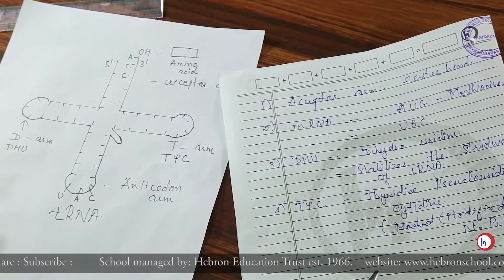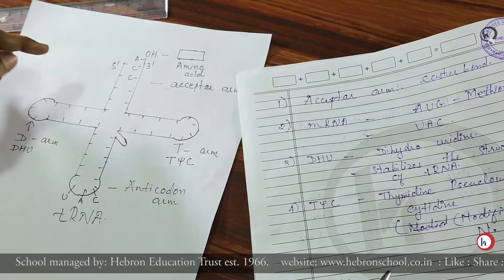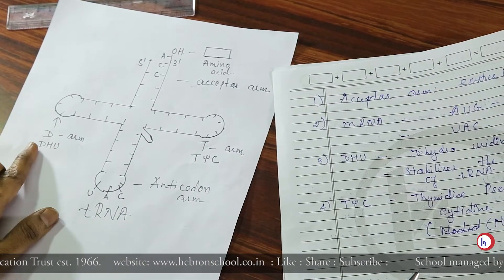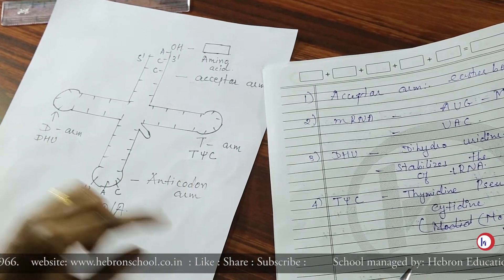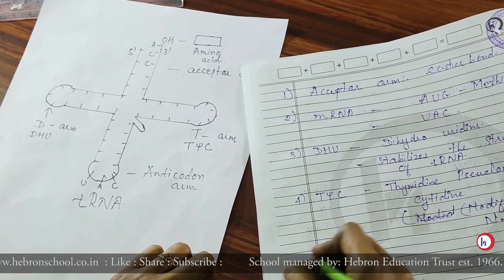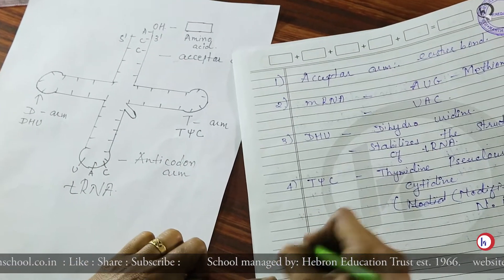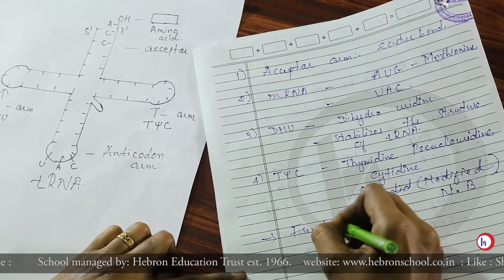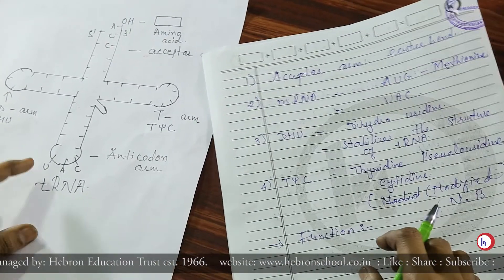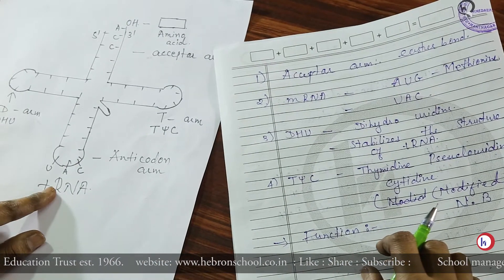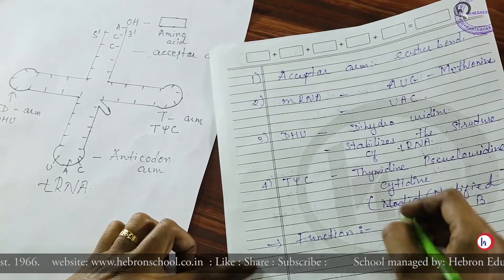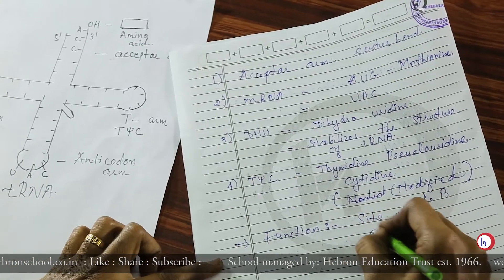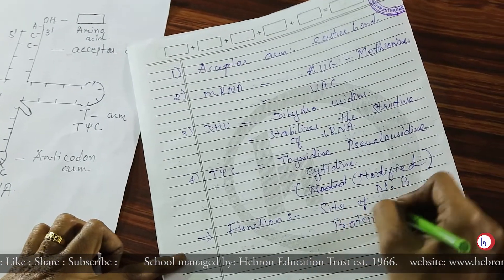Let us take a summary. tRNA has four arms: the amino acid acceptor arm, the anticodon arm, the D arm, and the T arm. The main function of tRNA is to transfer the appropriate amino acid to the site of protein synthesis.